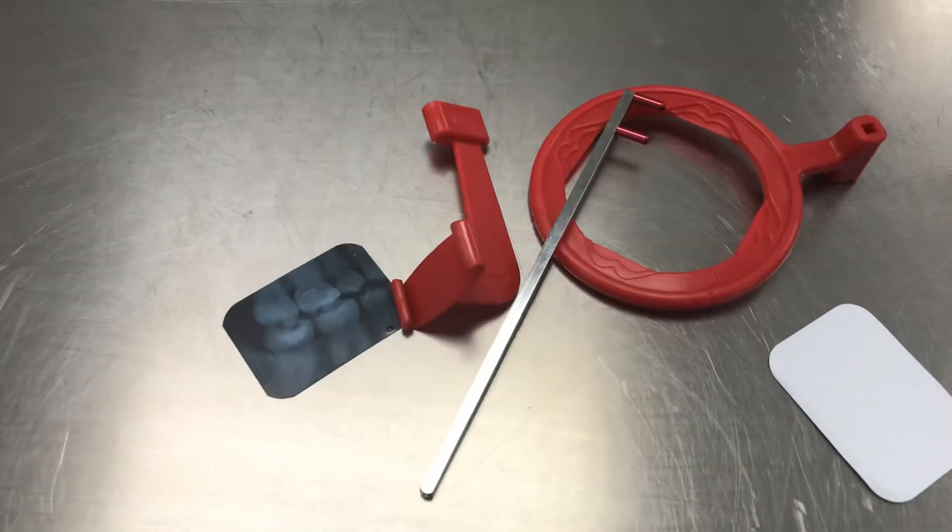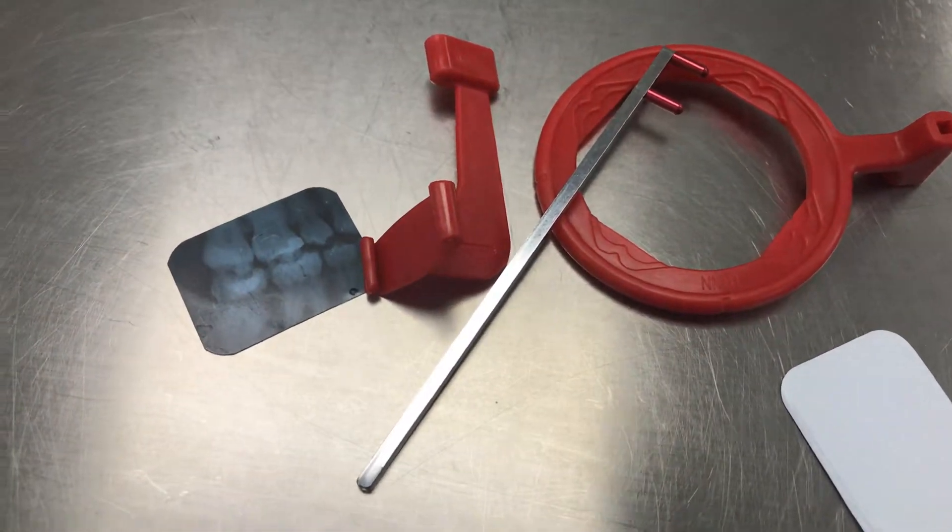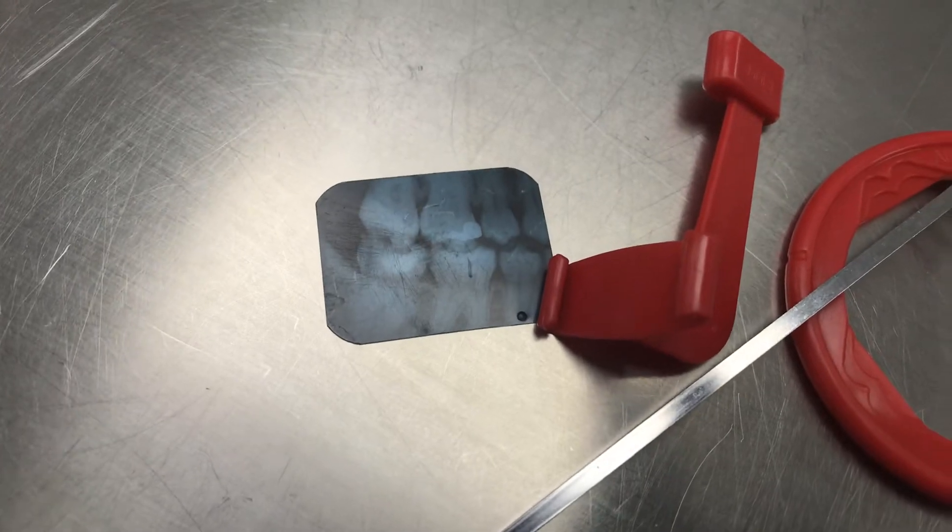Here we have the red. It is for bite wings. And here's a bite wing x-ray for you to see.